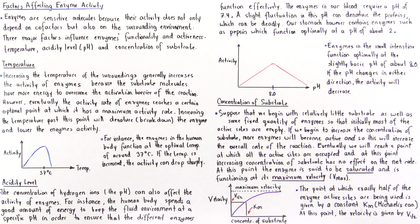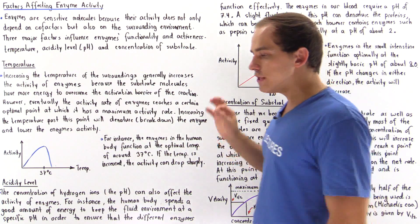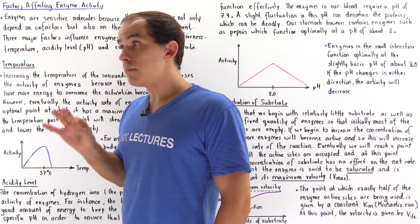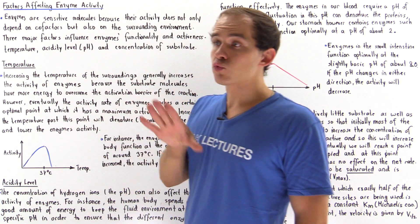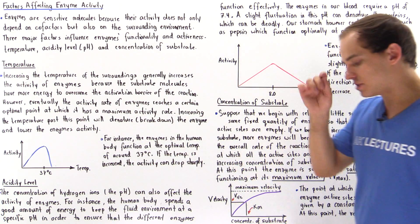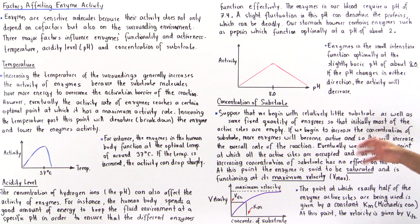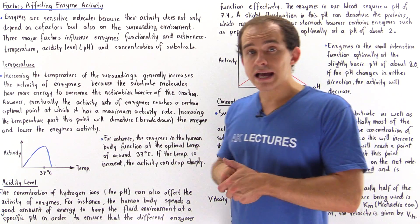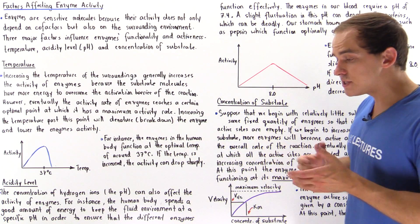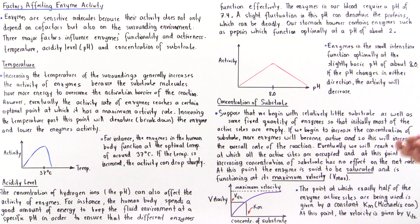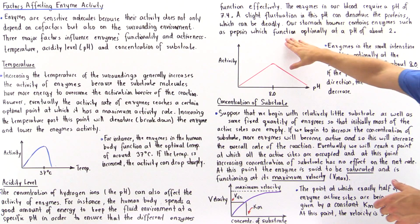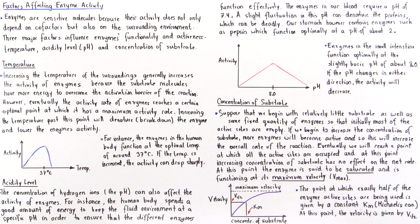Another case is our stomach and small intestine. Our stomach, unlike the blood, actually contains a relatively acidic environment. This is because a lot of our protein enzymes found in the stomach — for example, pepsin — function at a low pH. Pepsin functions optimally at a pH of about 2.